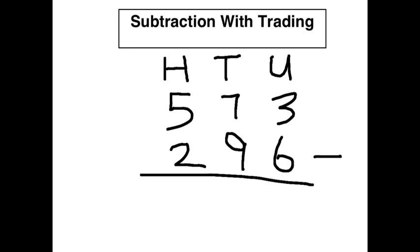Let's do that. Let's borrow one of those. We're left with 6. Let's bring that 10 across. 10 plus 3 is 13. 13 take away 6 is 7.